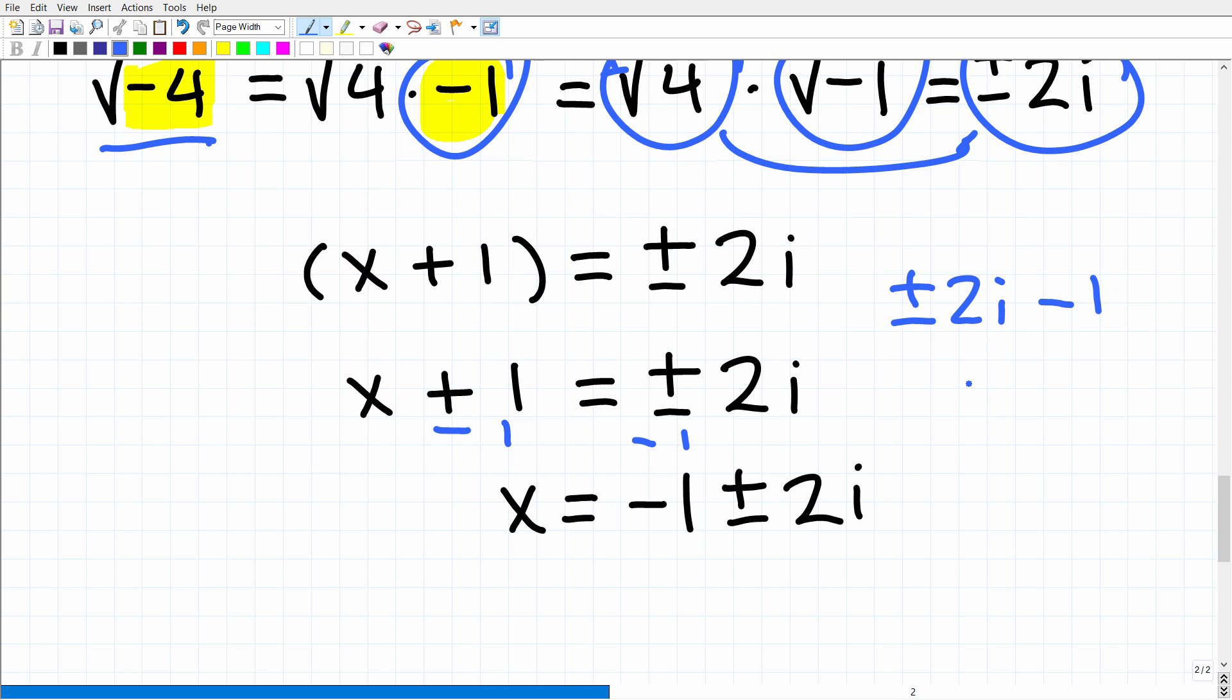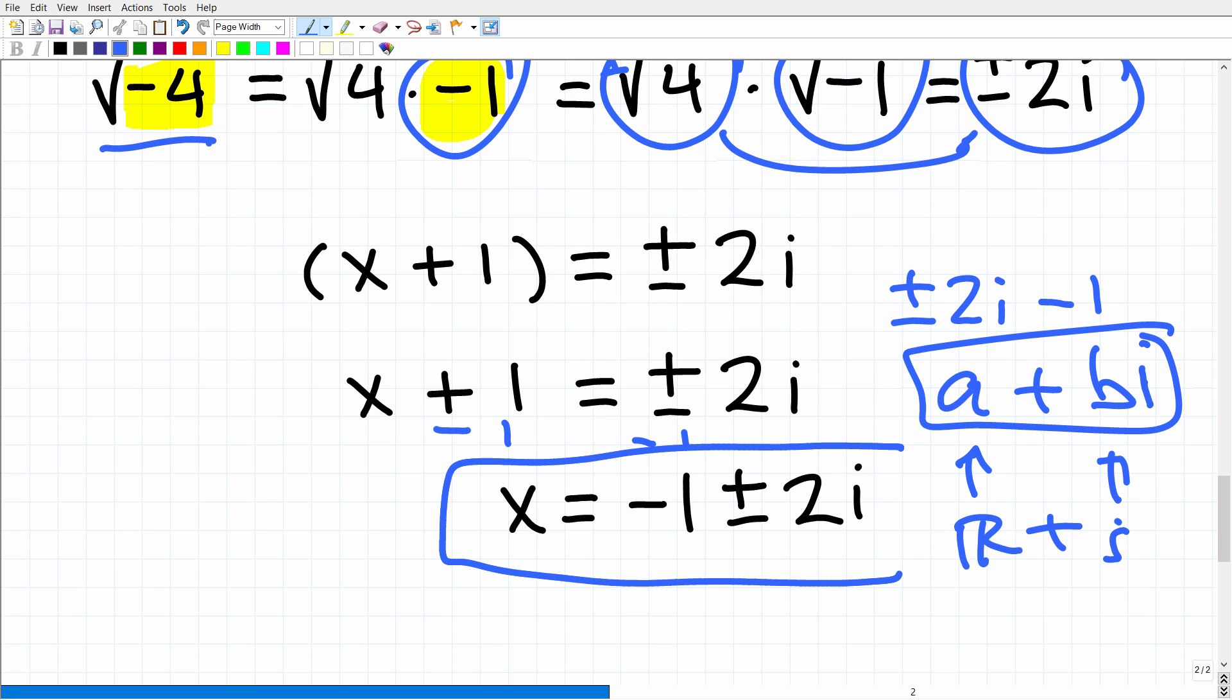We don't want to write our answer as plus or minus 2i minus 1, because you always want to have your complex numbers written in a + bi form, which is the real component and the imaginary component. So we're going to write this as negative 1 plus or minus 2i.